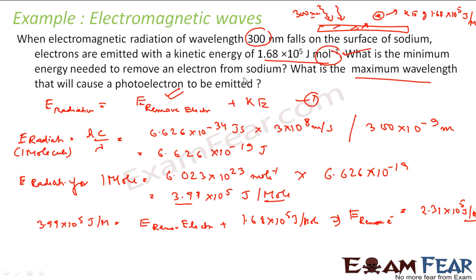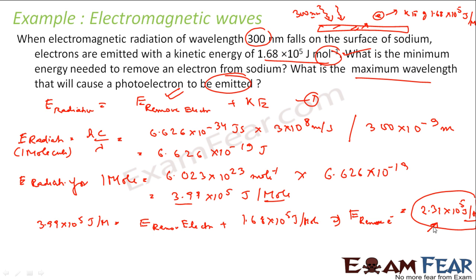Now the question asks: what is the maximum wavelength that can cause the photon to eject the electron? In that case, we use exactly this much energy, because any extra energy converts into kinetic energy. So we assume there is no kinetic energy — we just want the wavelength that will eject the electron out.